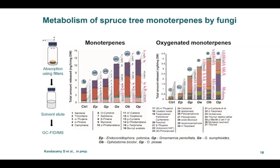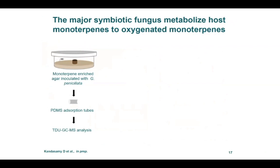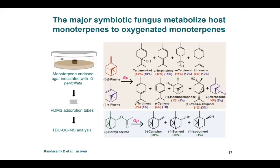To identify the precursors for this large variety of oxygenated monoterpenes, we grew fungus in artificial medium together with individual monoterpenes and absorbed headspace volatiles using PDMS tubes. Out of all individual monoterpenes tested, the majority of oxygenated monoterpenes are produced from the biotransformation of three host monoterpenes: alpha-pinene, beta-pinene, and bornyl acetate. Metabolism of alpha- and beta-pinene by fungus produced eight different compounds. Terpinen-4-ol was the dominant compound, and minor compounds included isopinocamphone and trans-pinocarveol. The bark beetle anti-aggregation pheromone verbenone is produced by the fungus only in the presence of alpha-pinene. Camphor — the dominant oxygenated monoterpene found in fungus-infected bark — is produced using bornyl acetate as the precursor.